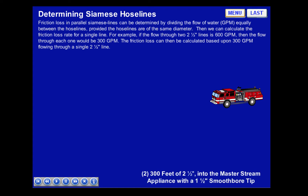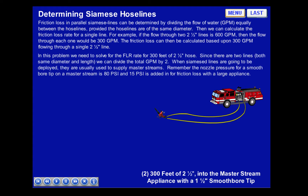The firefighters are ordered to pull two 300-foot 2.5-inch hose lines into the Master Stream appliance, following an inch and a half smoothbore tip. In this problem, we need to solve for the friction loss rate for 300 feet of 2.5-inch hose. Since there are two lines, both the same diameter and length, we can divide the total GPM by two. When these lines are deployed, they are usually used to supply Master Streams.